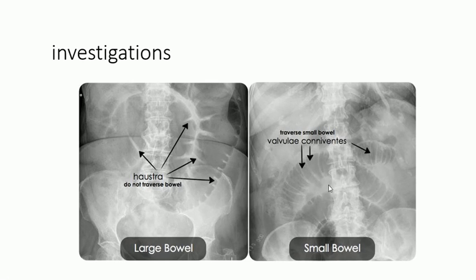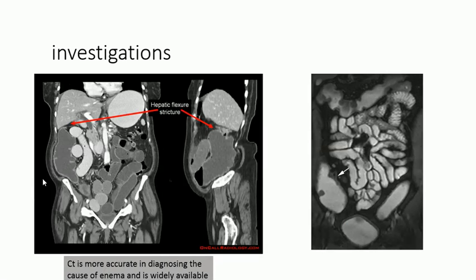CT scan or MRI is very helpful. CT scan is more rapid but involves radiation exposure; MRI does not. CT scan provides a more accurate diagnosis of the cause and location of obstruction and is widely available. Previously, barium enema was performed to find the site of obstruction, but it is no longer done routinely except in special circumstances.